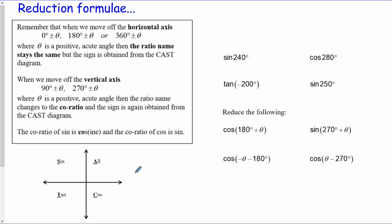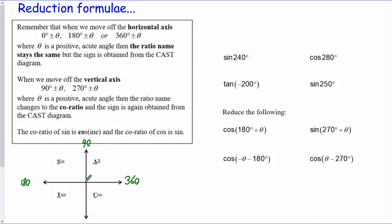What we're going to do now is look at what we call reduction formulae - 'reduce' means to make smaller. I've summarized what we did on the GeoGebra simulation. Whenever you move off a horizontal axis - in other words 180 plus or minus a bit, 360 plus or minus a bit, or even just 0 minus a bit - the ratio name stays the same and we get our sign from the CAST diagram. If however you deviate off a vertical axis - 90 minus a bit, 90 plus a bit, 270 minus a bit, and 270 plus a bit - then our ratio changes to what's called its co-ratio.